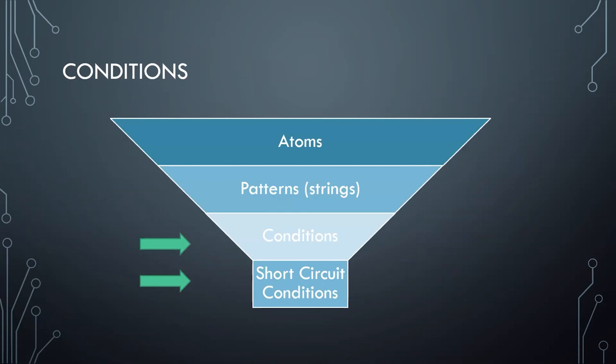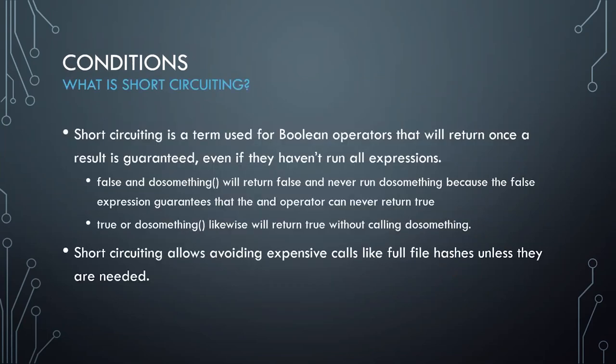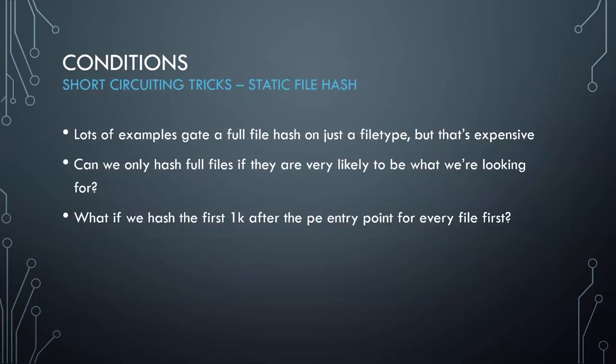This brings us to a couple of things you can do with conditions. Short-circuiting means if you have 'false and do something,' you won't do that thing. If you have expensive operations, having a guard condition in front to block them is really effective — you avoid them unless you really need to.